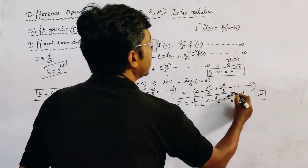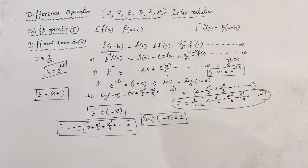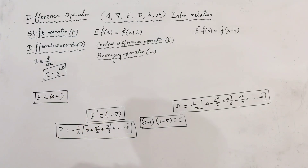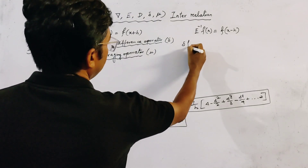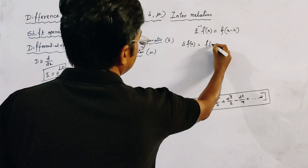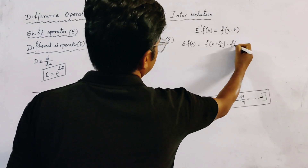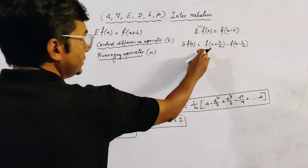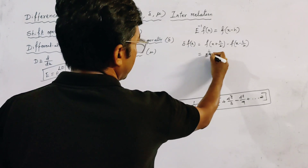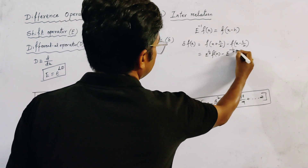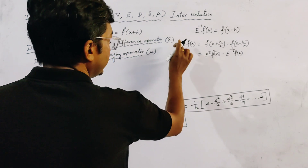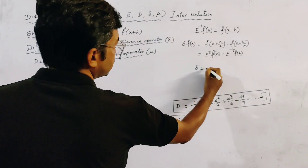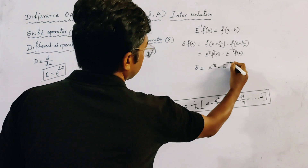Now we define the central difference operator delta (δ). The central difference operator δ of f(x) is given by f(x + h/2) - f(x - h/2). Using the shift operator, we can write this as E^(1/2) f(x) - E^(-1/2) f(x). So the relation between the central difference operator δ and shift operator E is: δ is equivalent to E^(1/2) - E^(-1/2).